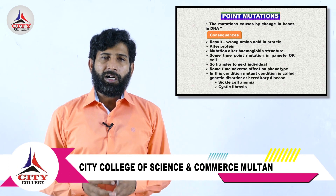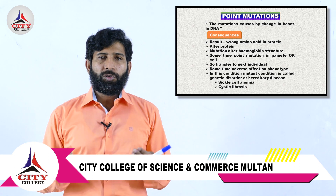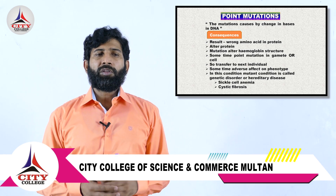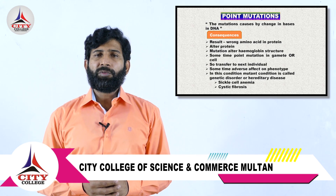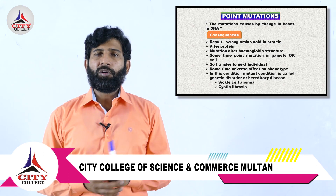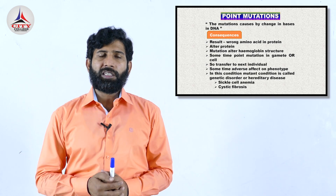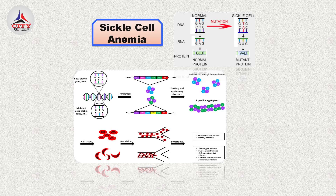In these conditions — genetic disorder or hereditary disease — examples include sickle cell anemia, cystic fibrosis, and other hereditary diseases. Let us now look at sickle cell anemia with a small diagram.